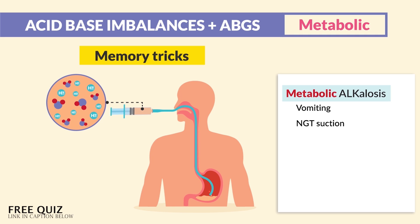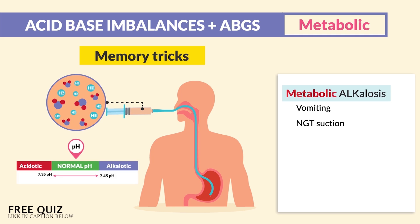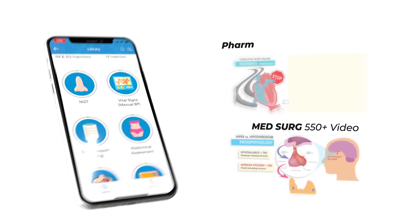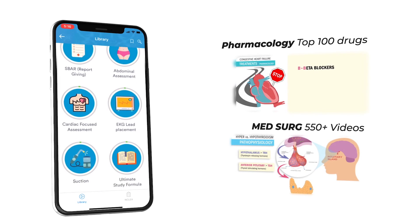So the key points to write down: vomiting and too much NG tube suctioning result in metabolic alkalosis.